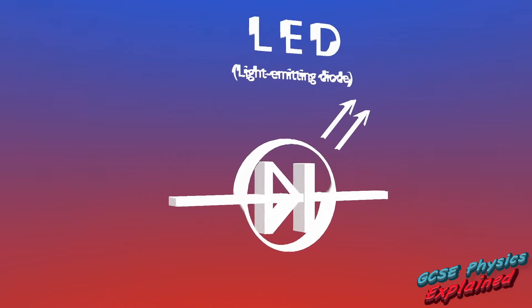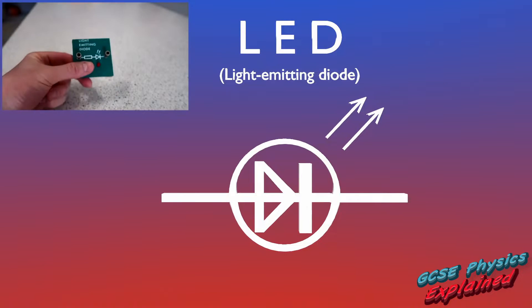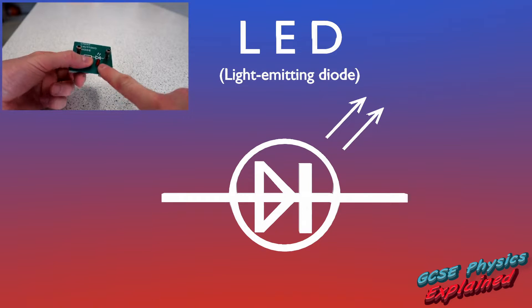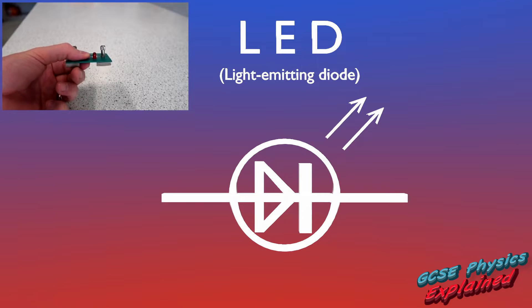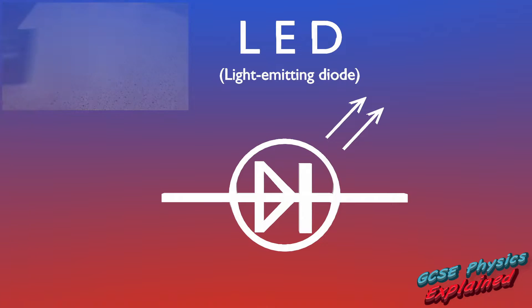LED stands for light emitting diode. It's a diode that emits light when current is flowing in the forward direction and doesn't emit light when current is trying to flow backwards. The symbol is the same as the diode but with arrows representing light coming out of it.